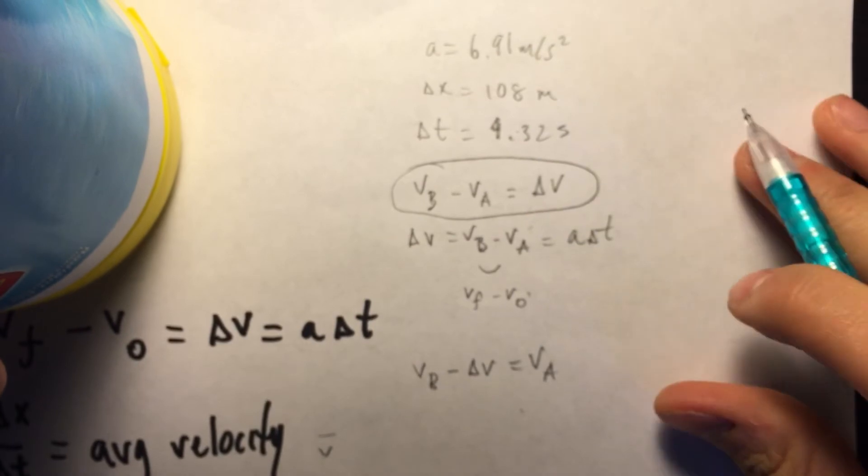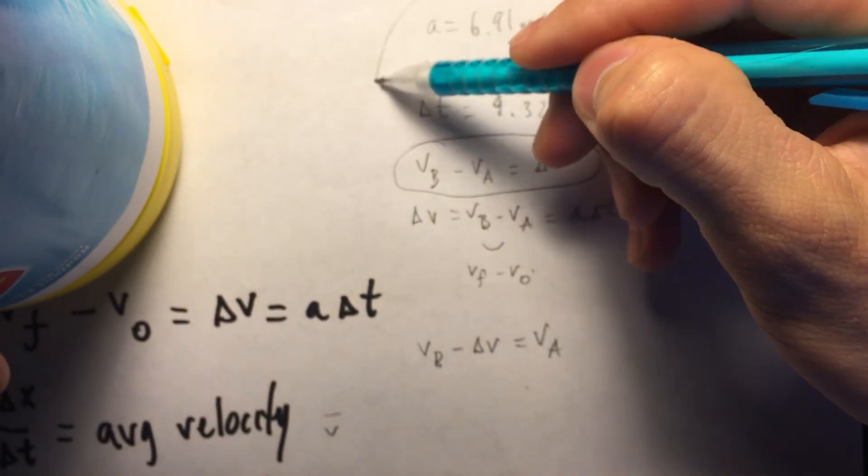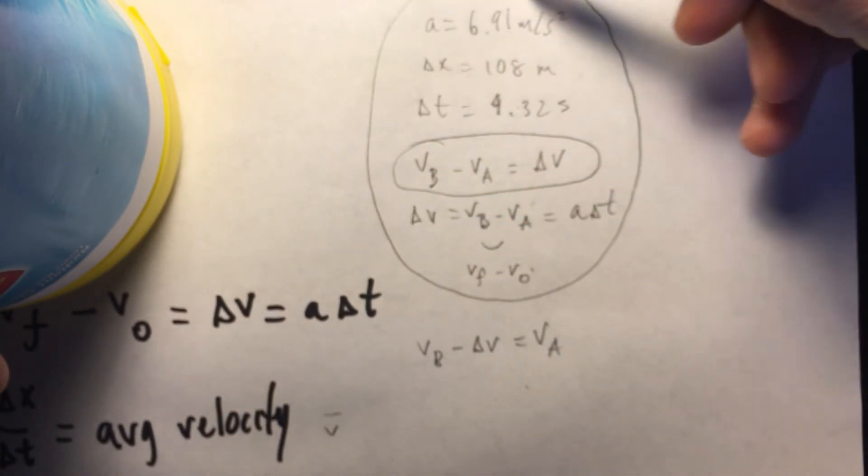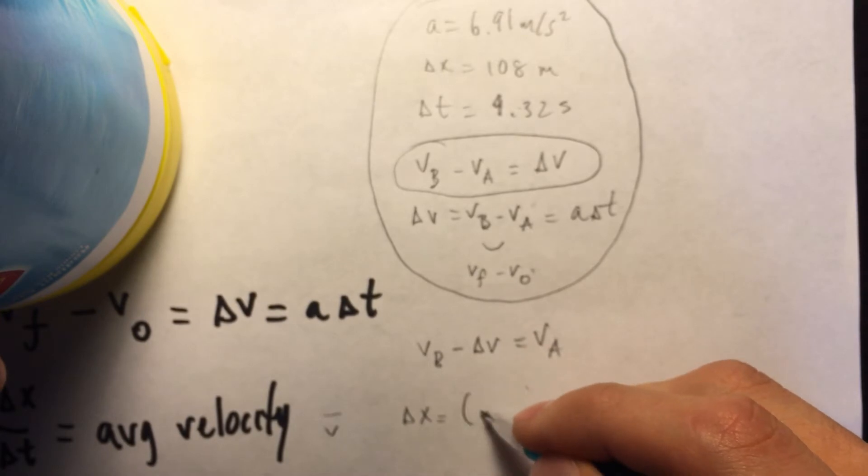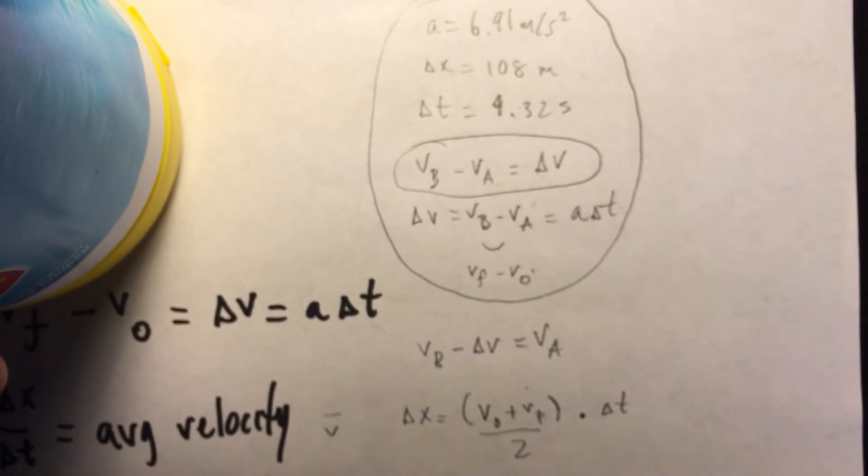Now, what equation, what other kinematic equation has all of these values that we had just identified? If we look back at our kinematics, we have one that says change in X equals, open parenthesis, V naught plus V final, close parenthesis, over 2, all of this times the change in time. So we have X, we have time, we don't have this, we want to find this, and this is just a 2.